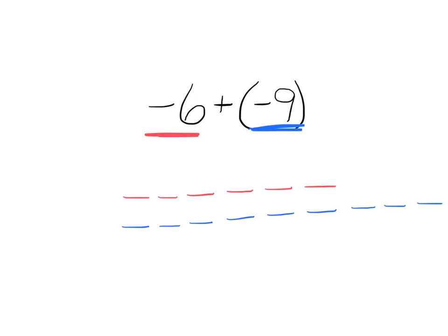We move right on to step three, which is to count up what you have. We have a whole bunch of negatives — one through fifteen. Six negatives and nine more negatives is a total of fifteen negatives, and that's the answer: fifteen negatives, or negative fifteen.